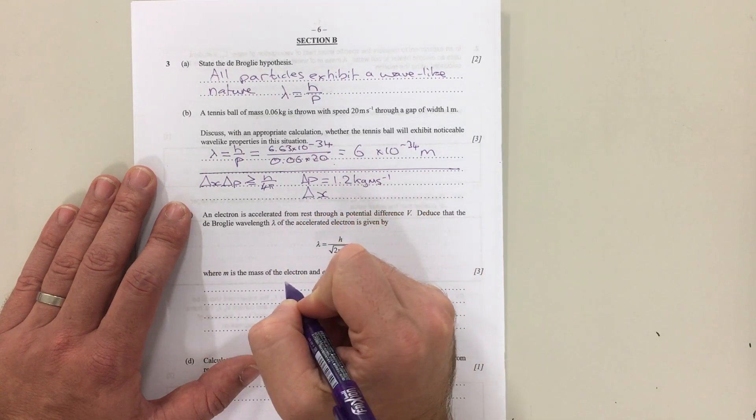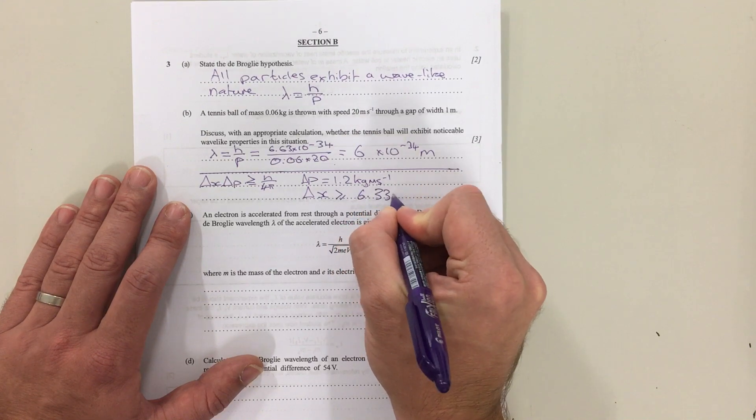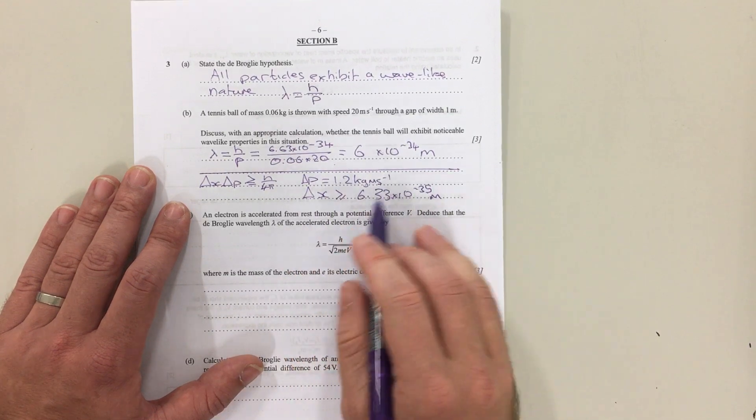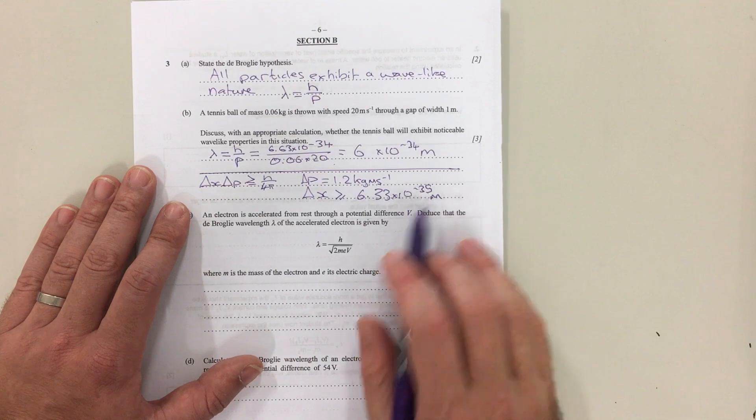Putting that into this equation gives you an uncertainty in your position of about 6.33 × 10⁻³⁵ meters. Now that uncertainty in the position is again so small that no diffraction is going to be noticeable and we're not going to notice wave-like behavior.